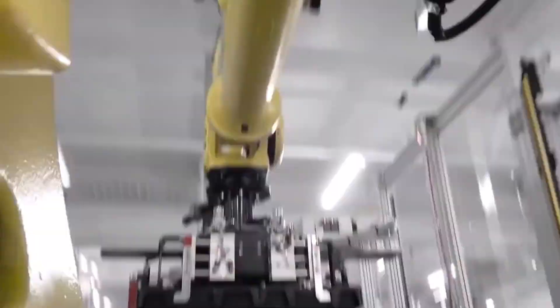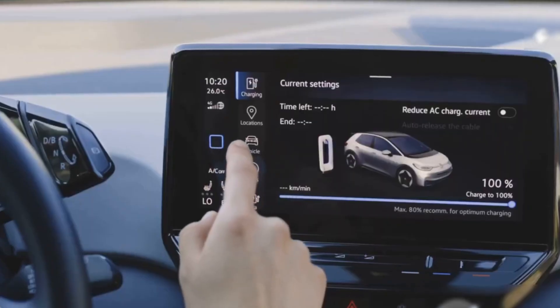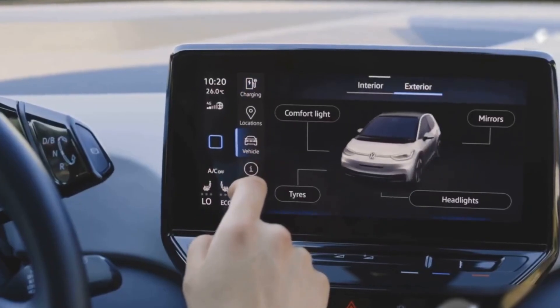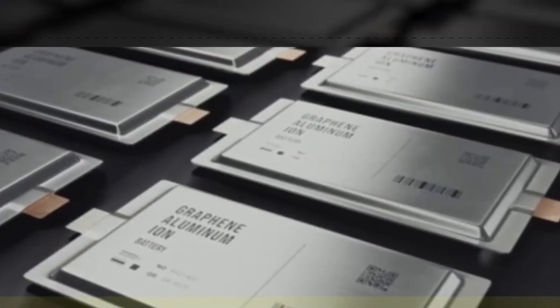Recyclability adds another layer. While lithium batteries degrade with each recycling process, aluminum-ion batteries retain up to 95% of their efficiency even after multiple cycles. This reduces long-term production costs and waste.